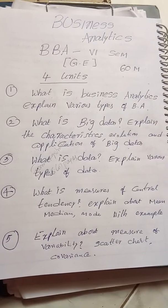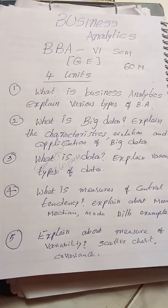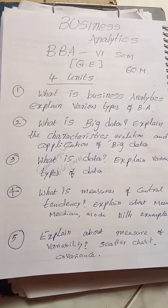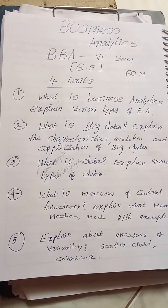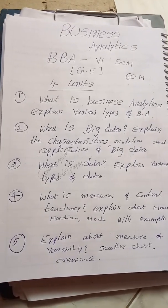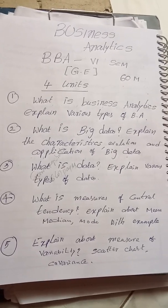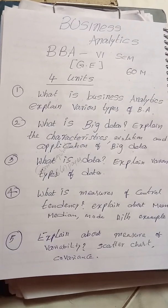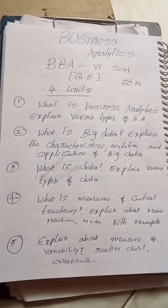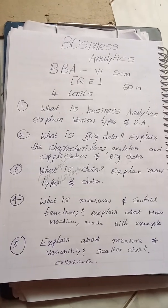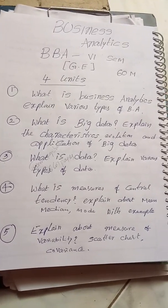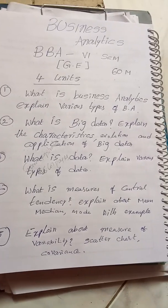We still don't know the paper pattern, but we are expecting there will be five long answer questions of 12 marks each — 5 into 12 equals 60 — or it may be two short answer questions or four short answer questions, then remaining long answers. Whatever it may be, my dear students.